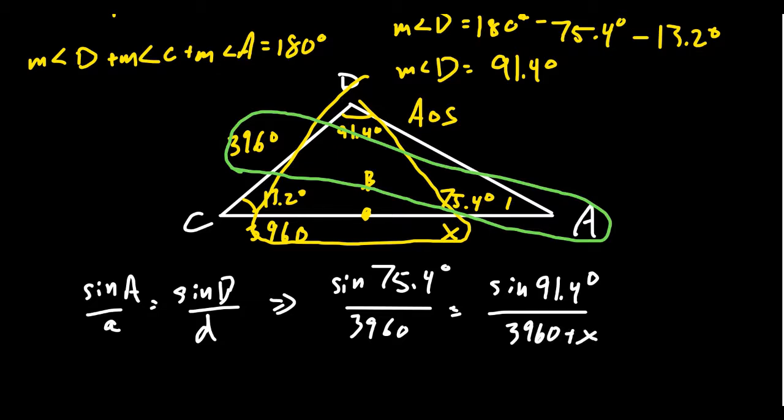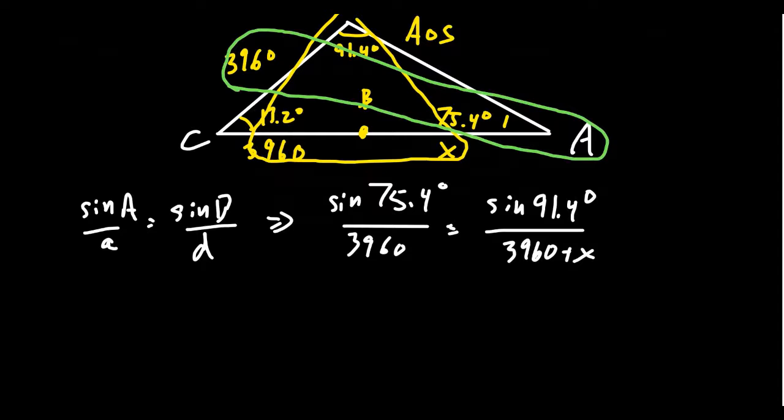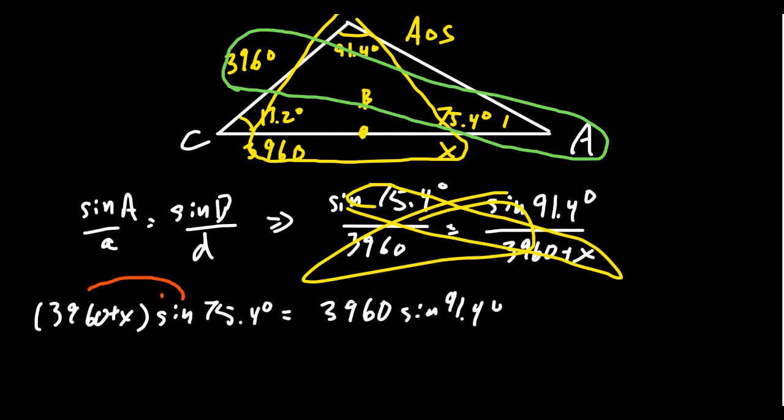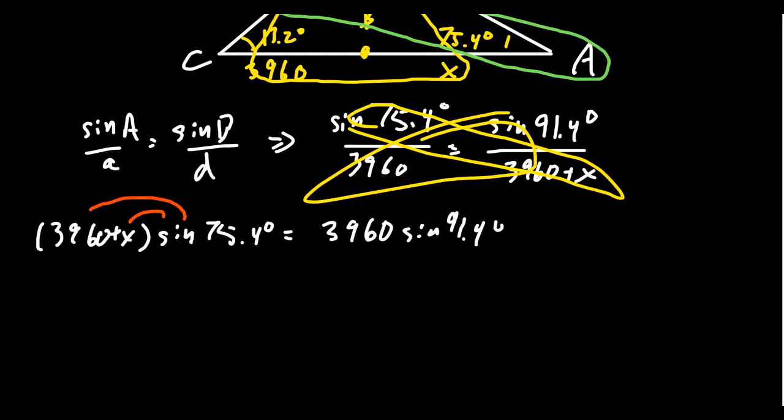For which sine of A, we have here this 75.4 degrees. This is over little a, which is going to be 3,960. Then we get sine of D, which is 91.4 degrees, over little d, which is 3,960 plus X. We don't know what X is, but we have to solve for X here.